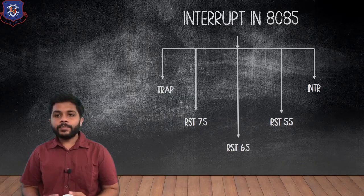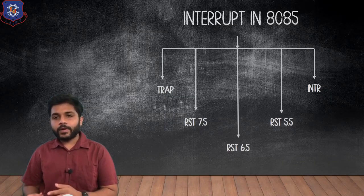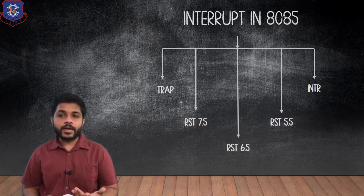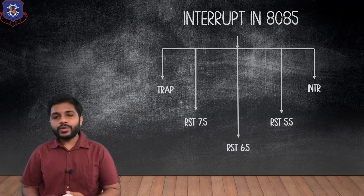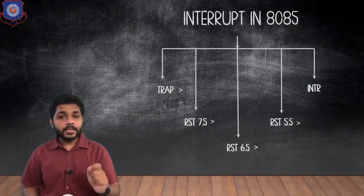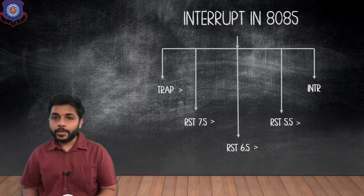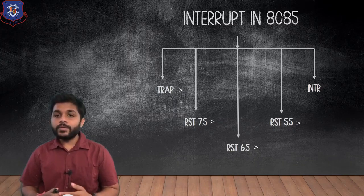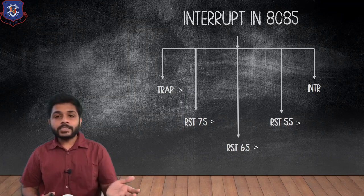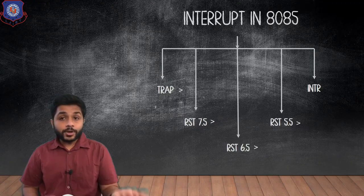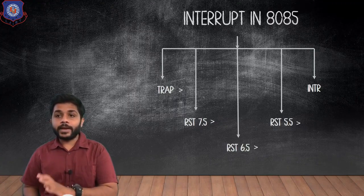We know that for the microprocessor 8085 there are five interrupts: TRAP, RST 7.5, RST 6.5, RST 5.5, and INTR. We also know the priority of these interrupts — TRAP has the highest priority and INTR has the lowest. Some of these interrupts are maskable and some are non-maskable, and at any time some interrupts are in process and some are pending.